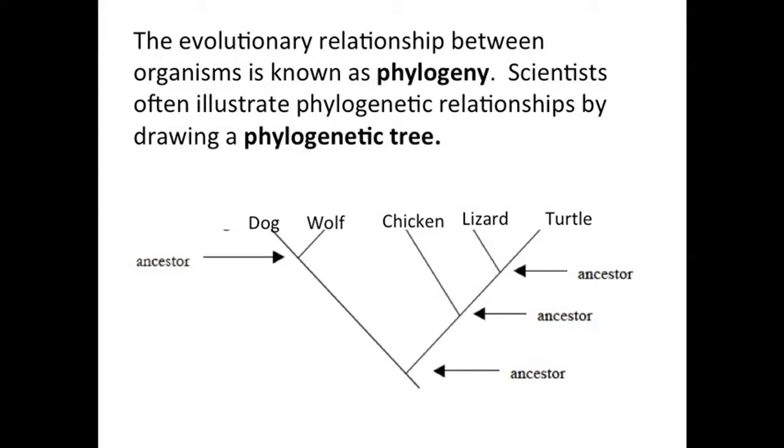The evolutionary relationship between organisms is known as phylogeny, so therefore they call it a phylogenetic tree.